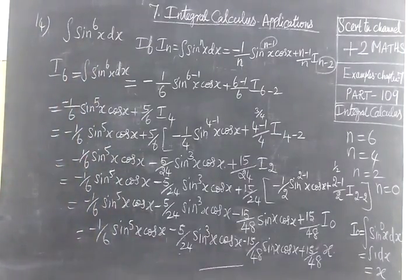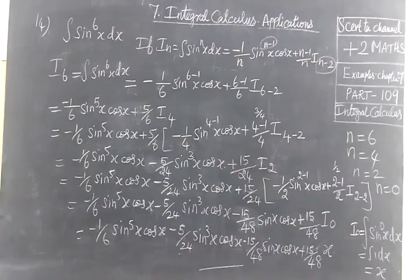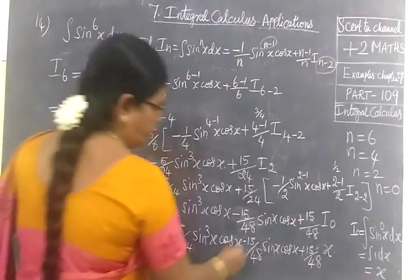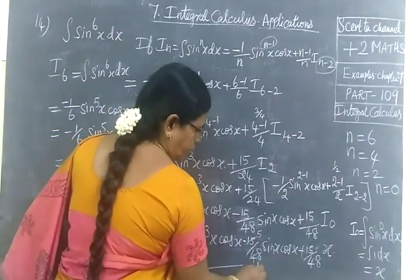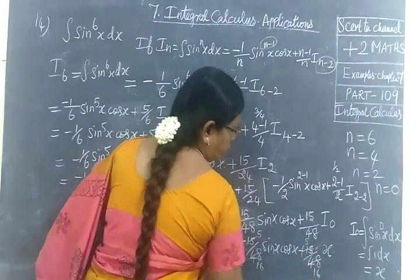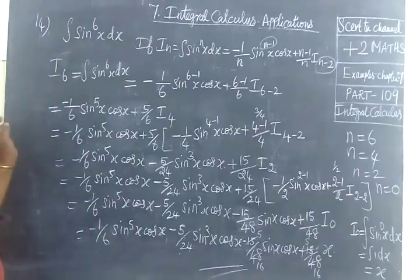The final answer is: minus 1/6 · sin power 5x · cos x minus 5/24 · sin cube x · cos x plus 5/16 · sin x · cos x plus 5/16 · x plus constant. After cancellation, the last term has coefficient 5/16. That's the complete answer. Thank you.